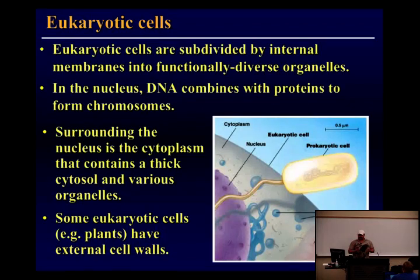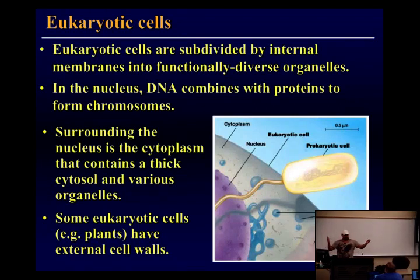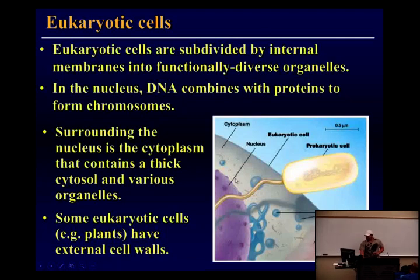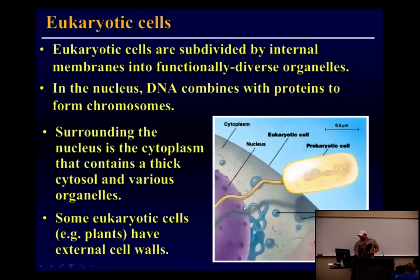Remember, there are two different kinds of bacteria: the archaebacteria and the eubacteria. Eukaryotic cells are big compared to prokaryotes. Here's an image — this is the eukaryote. How do I know this is the eukaryotic cell? It has a nucleus, which is shown right here. The nucleus of the eukaryote is bigger than the whole prokaryotic cell, so this is huge by comparison.